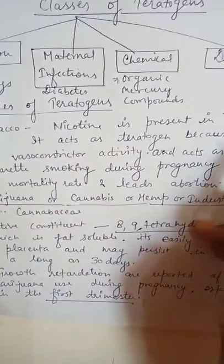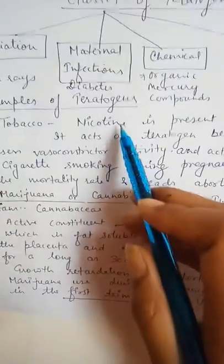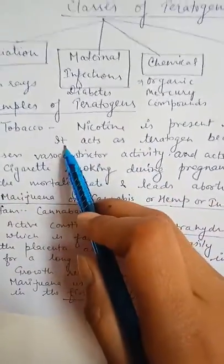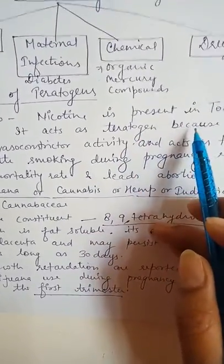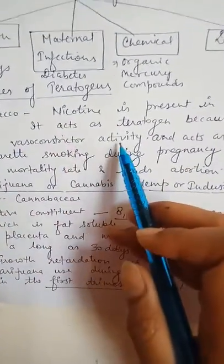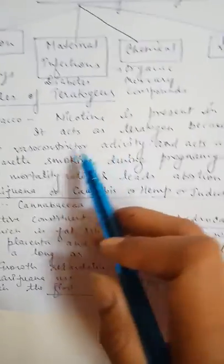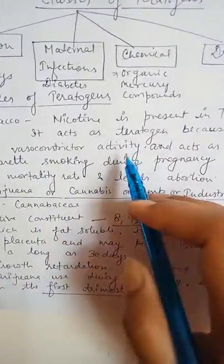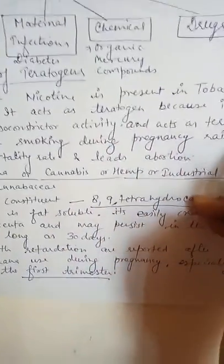Examples of teratogens: there are some natural examples. Tobacco — we know that nicotine is present in tobacco, which acts as a teratogen because it possesses vasoconstrictor activity, meaning it has the ability to constrict blood vessels, and thus acts as a teratogen.